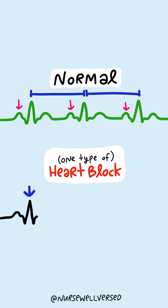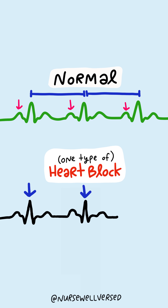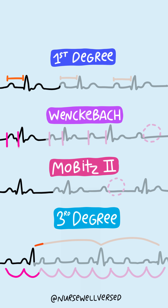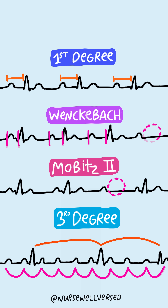A heart block is a type of arrhythmia due to electrical impulses that control the heart being disrupted. There are four main heart blocks you need to know.